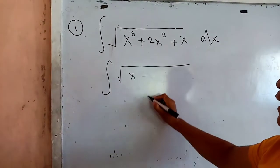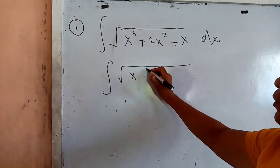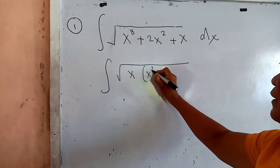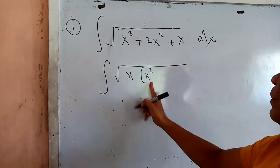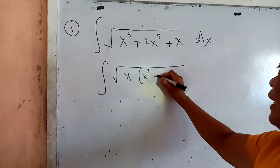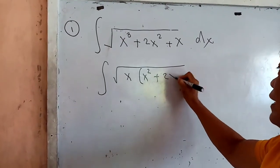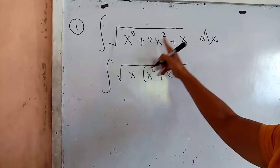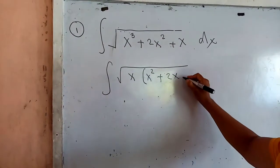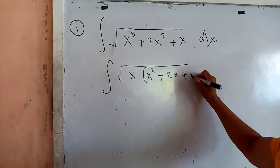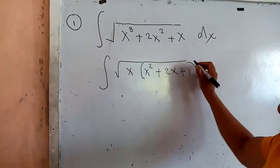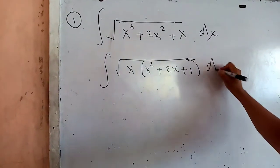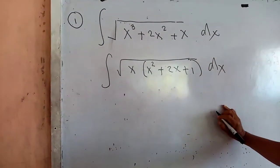I said x to be multiplied by x squared, because when you multiply it will be x cubed, then plus 2x, where 2x times x will be 2x to the second power. I said 1 — 1 times x will be x — then still multiply it by the differential dx.